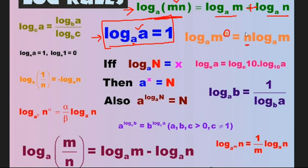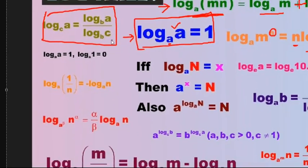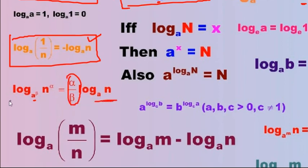The power n in logarithm is brought before and written as it is. Log base c of a equals log a divided by log c. Log(1/n) equals log 1 minus log n, which equals minus log n. Log of a to the power of alpha, base n to the power of beta, equals alpha by beta — this is a very important formula.